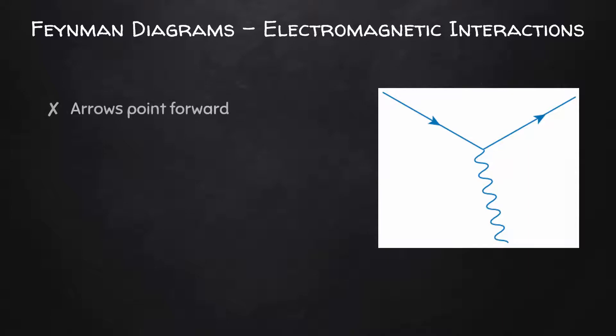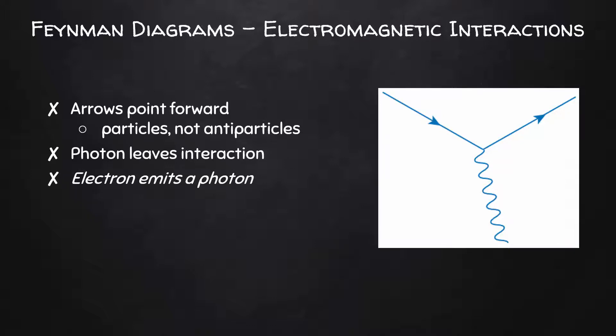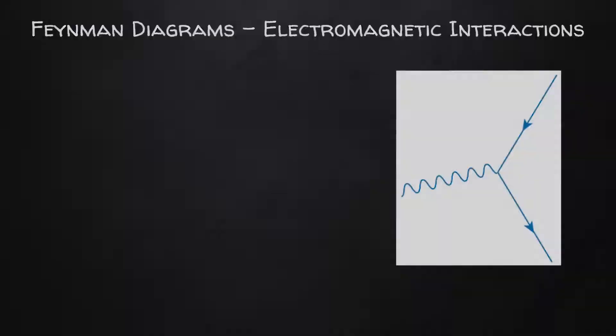This should look familiar so far. As we saw before, the arrows point forward, which means these are particles and not antiparticles. We can see that a photon leaves an interaction. And for this part alone, we can interpret this as an electron emitting a photon. If we rotate that 90 degrees, we get a completely different interaction.